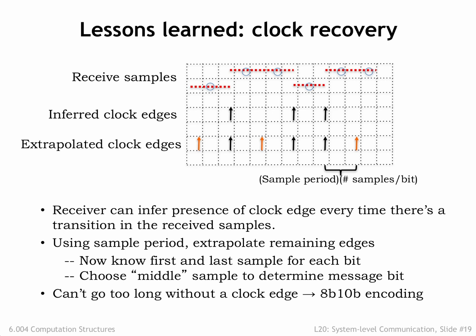To keep the local clock in sync with the transmitter's clock, the incoming waveform needs to have reasonably frequent transitions. But if the transmitter is sending all zeros, how can we guarantee frequent enough clock edges?